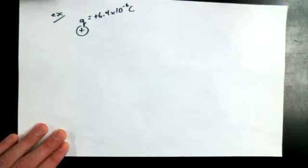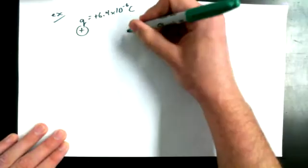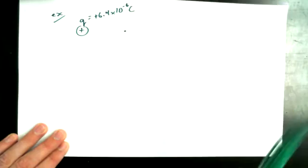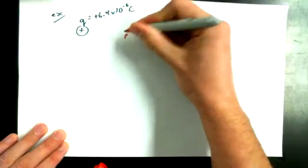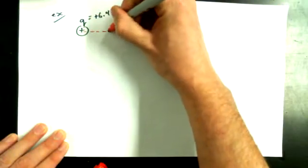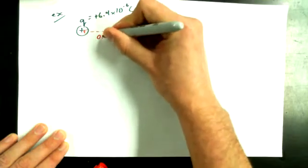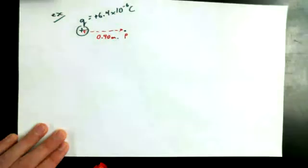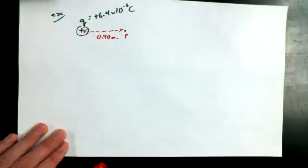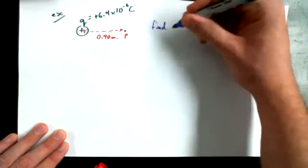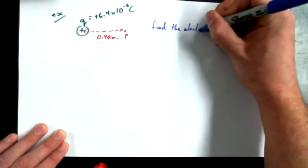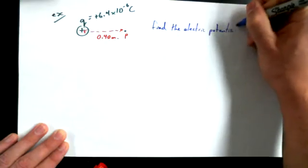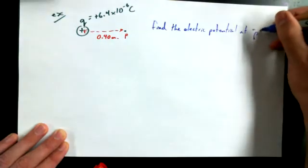So here's the example. This point charge has a charge of 6.4 times 10 to the power of negative 6 coulombs, or 6.4 microcoulombs — get used to seeing the prefix micro, which is 10 to the power of negative 6. I want to find the electric potential at point P, which is 0.40 meters away from the point charge.